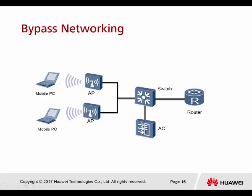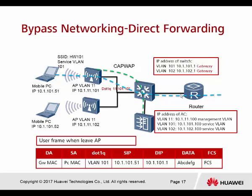In bypass networking, the AC is attached beside the switch. In direct forwarding mode, there is a big change: the user data can be sent directly to the gateway without returning to the controller. From the packet capture in this area, the gateway points directly to the core switch. You can see the PC MAC address and the destination is the switch MAC address — the gateway — and traffic goes directly.